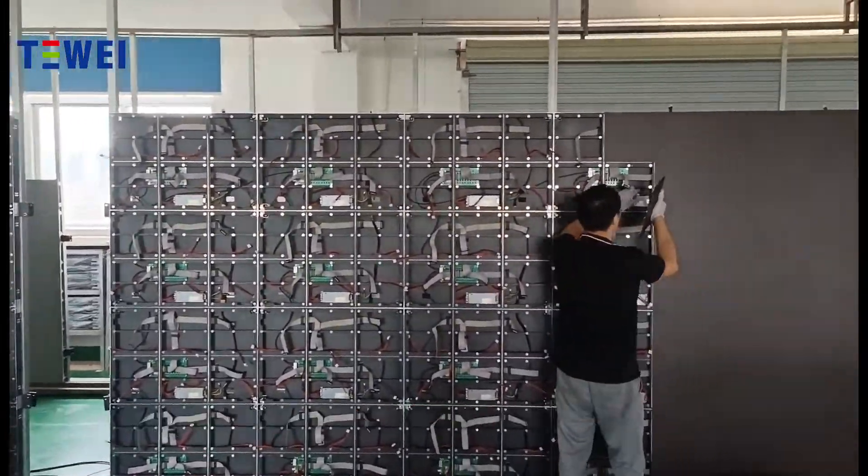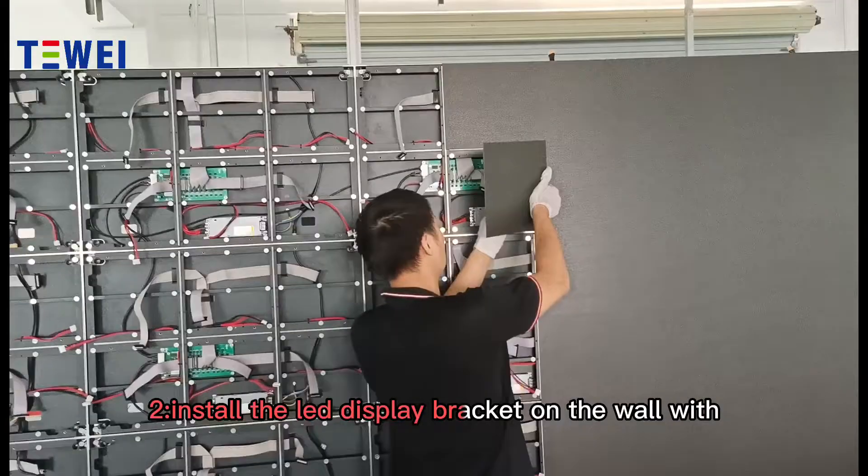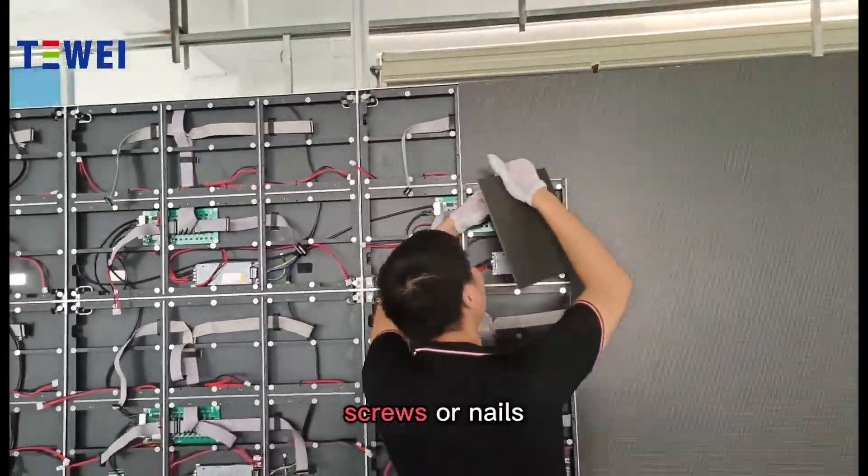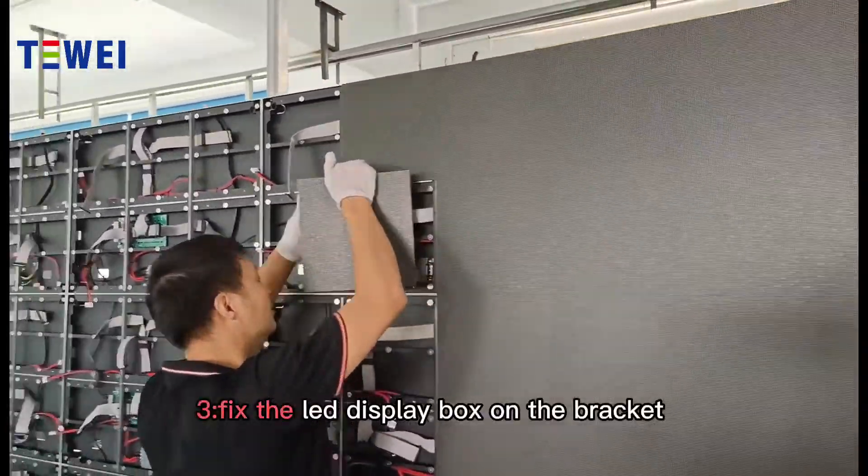Step 2: Install the LED display bracket on the wall with screws or nails. Step 3: Fix the LED display box on the bracket.